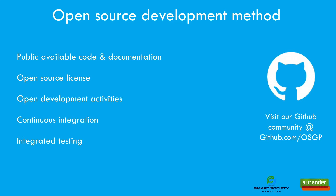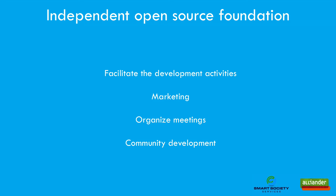More information is available at opensmartgridplatform.org and the source code is available at github.com/osgp. To prevent an Alliander lock-in on the project, we would like to start an independent open-source foundation. This non-profit organisation will facilitate development activities, marketing of the OpenSmart Grid Platform, the infrastructure needed for development, and organised meetings such as an OpenSmart Grid Platform summit. We are looking for multiple parties to support this foundation, so please contact us if you're interested.